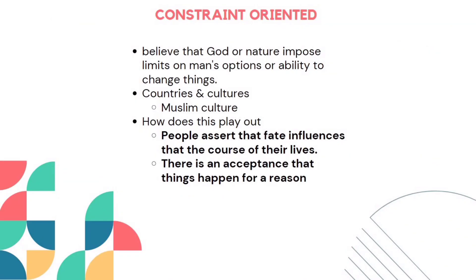Constraint oriented people believe that God or nature imposes limits on man's options or ability to change things. Countries or cultures which follow this include Muslim cultures. How does this play out? People assert that fate influences the course of their lives — it depends on destiny. There is an acceptance that things happen for a reason: since this had to happen, that is why it is happening.